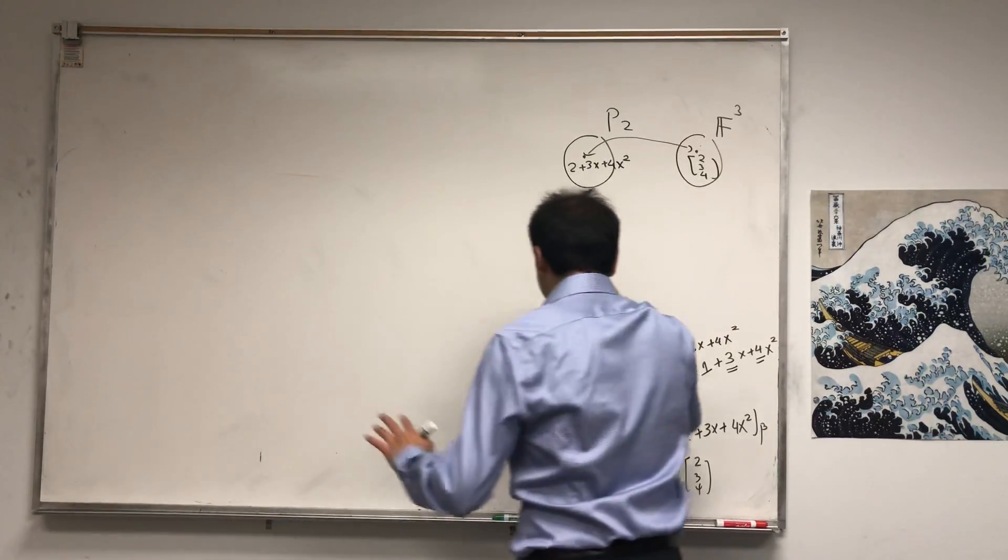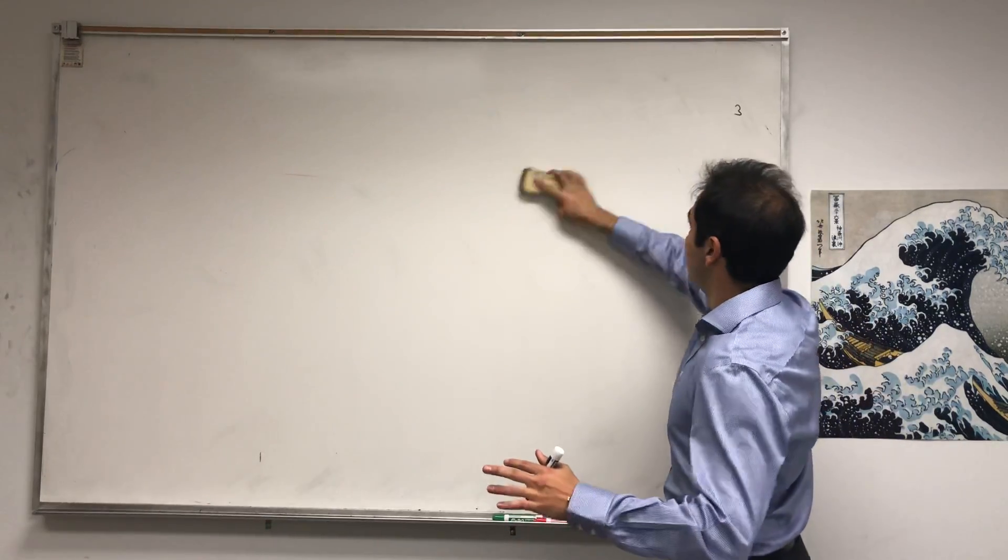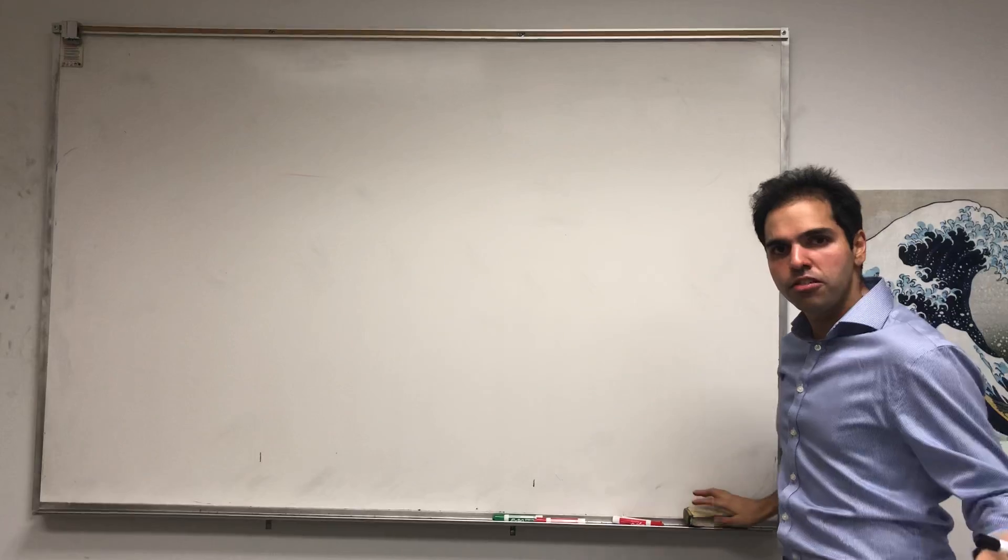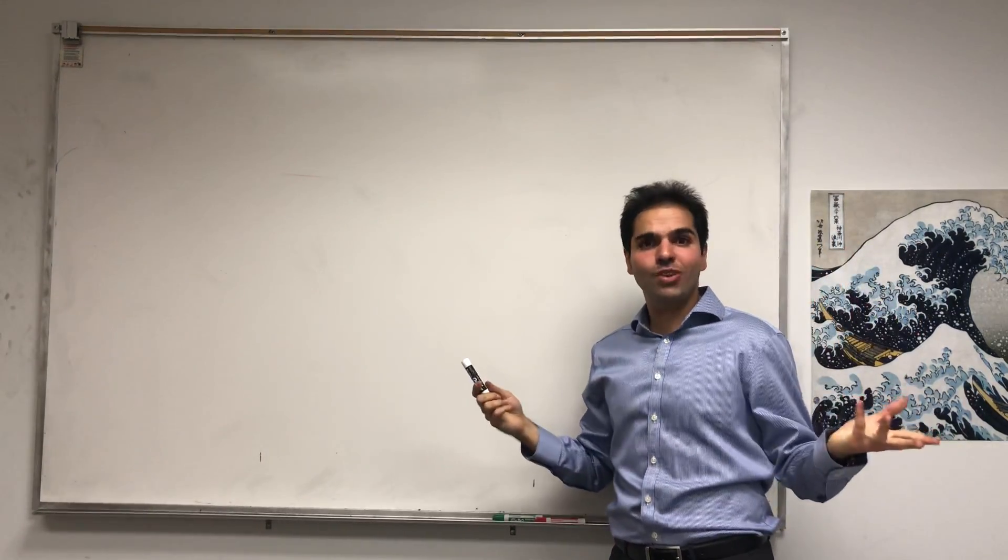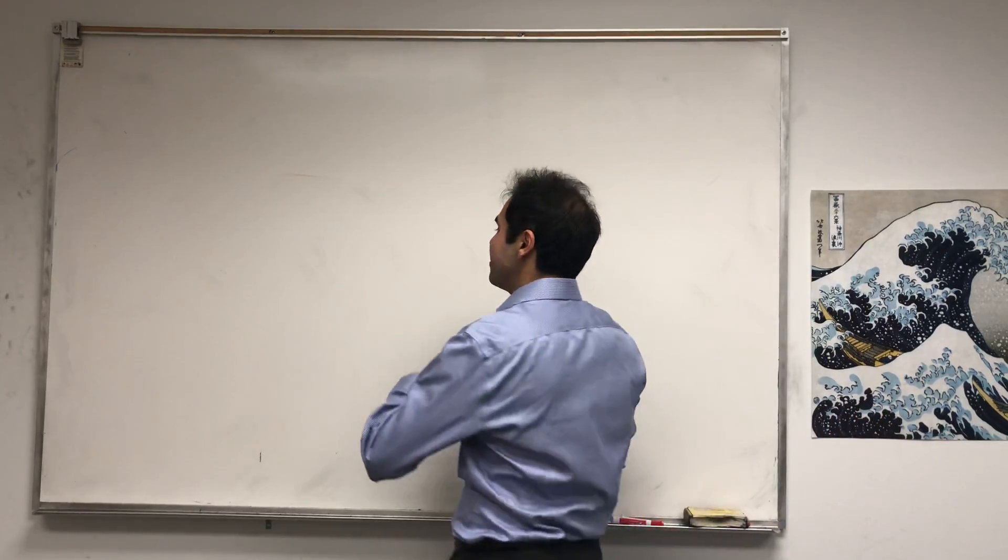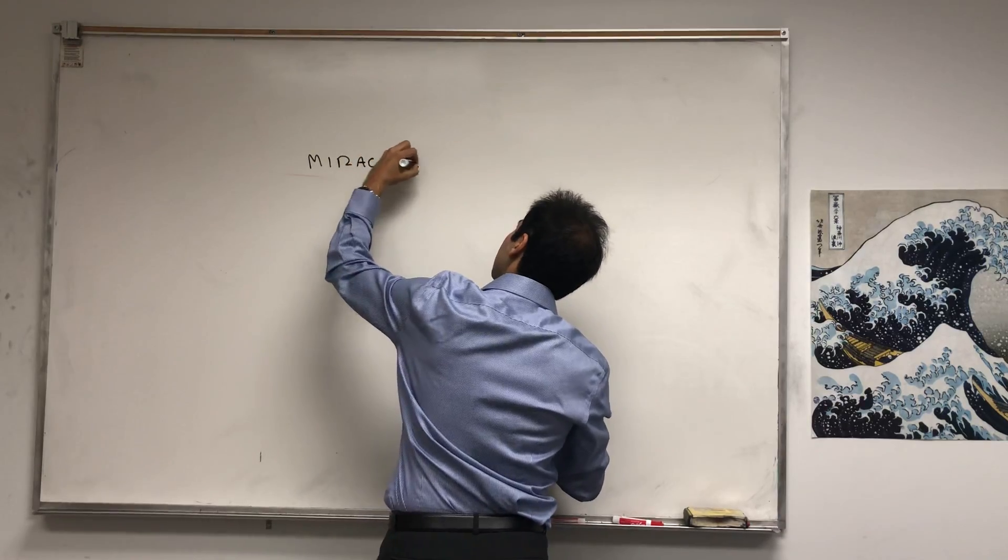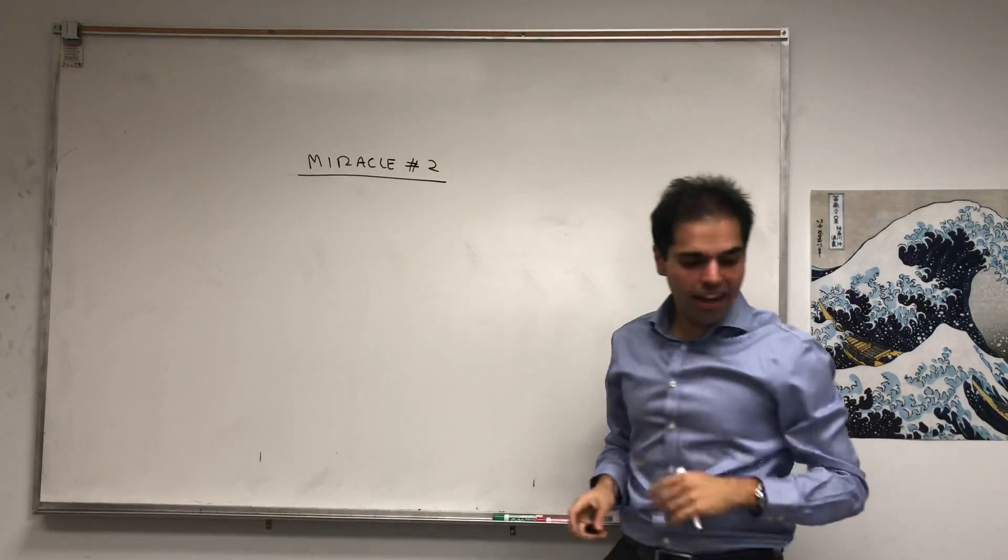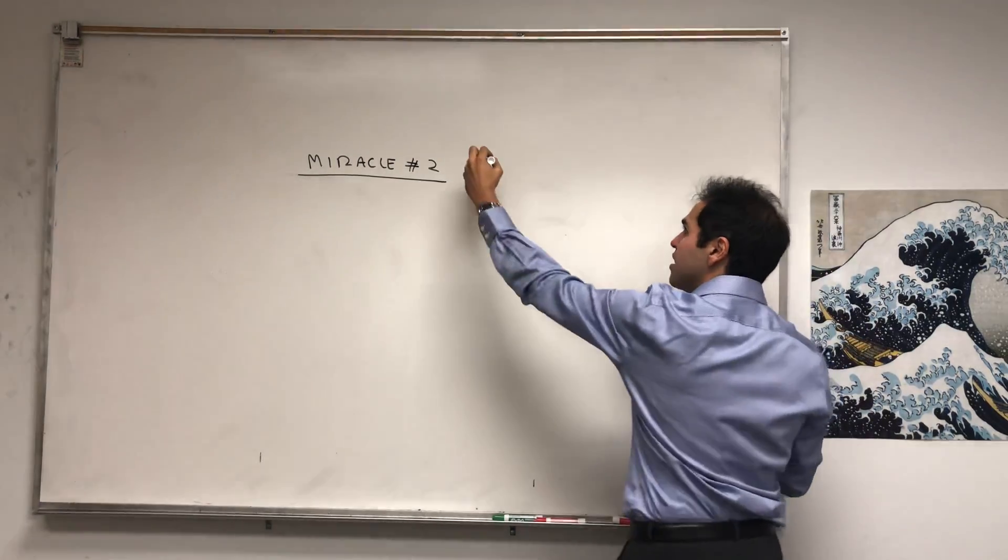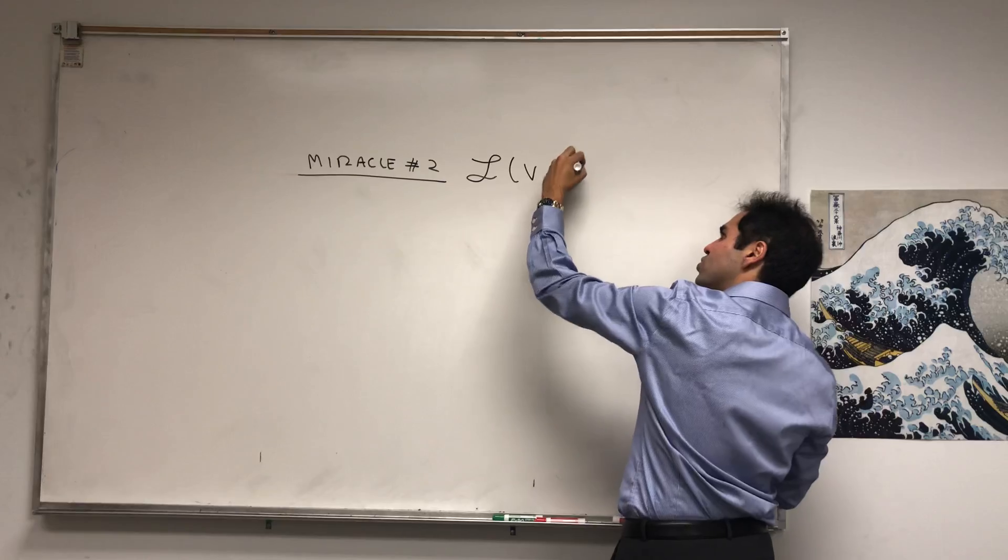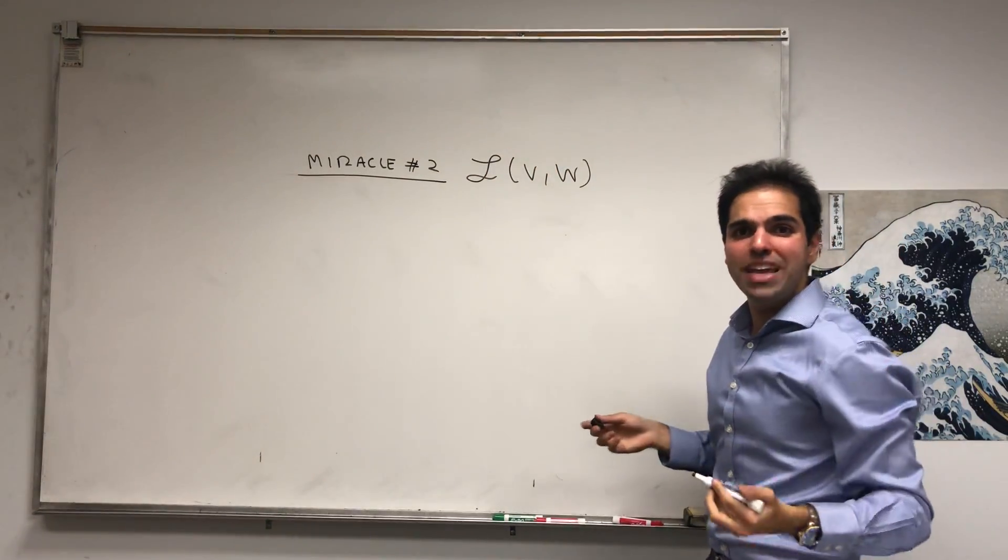Alright, so that was the first thing I wanted to talk about, the first miracle, and that's because in linear algebra we talked about vector spaces—now they're concrete. On the other hand, we talked about linear transformations, and here's the second miracle. Number two: so let V and W be finite-dimensional vector spaces. Then it turns out the set of all linear transformations from V to W is just isomorphic to matrices.